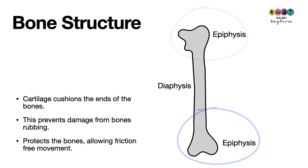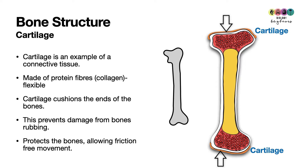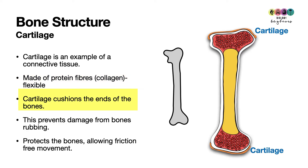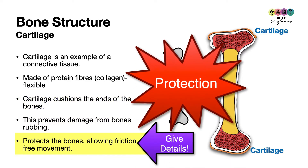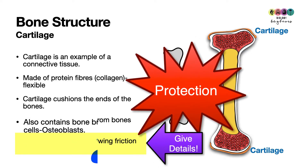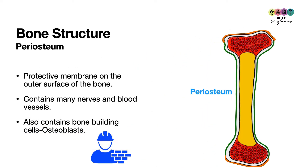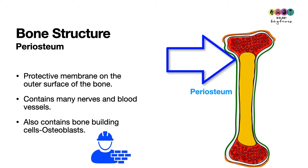One end is called the epiphysis. Covering the ends of bones is cartilage, which is a connective tissue made of protein fibers — collagen — and it's highly flexible. Cartilage cushions the ends of the bones, preventing them from chipping together, allowing friction-free movement. So the role of cartilage is protection. Covering the outside of bones is the periosteum, a protective membrane on the outer surface of the bone, everywhere except where cartilage covers the top and bottom.